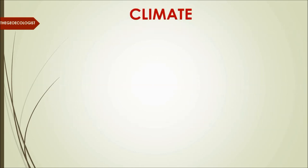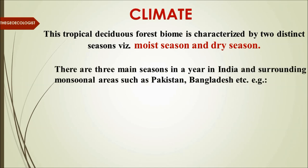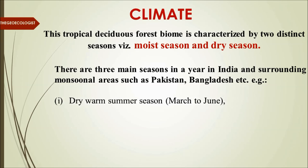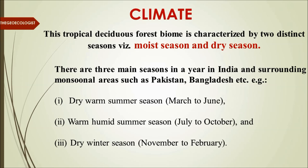The tropical deciduous forest biome is characterized by two distinct seasons: one moist season and one dry season — seasonality is the important factor. There are three main seasons in a year in India and surrounding monsoonal areas such as Pakistan and Bangladesh: a dry warm summer (March to June/July), a warm humid summer with monsoon (July to October), and a dry winter (November to February), apart from some patches of winter rainfall due to western disturbances.